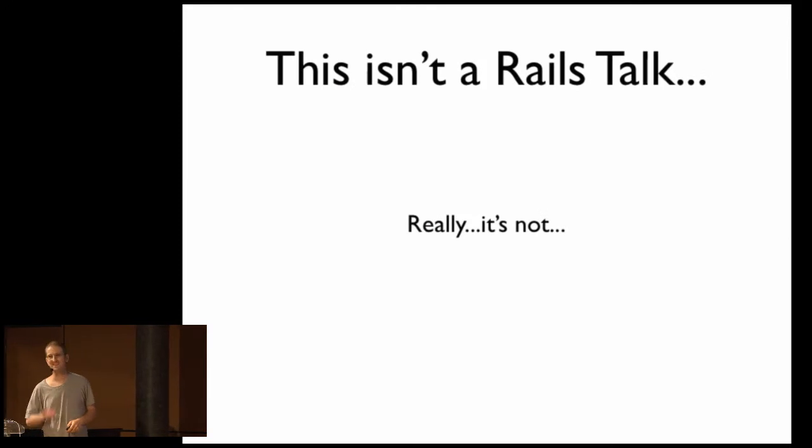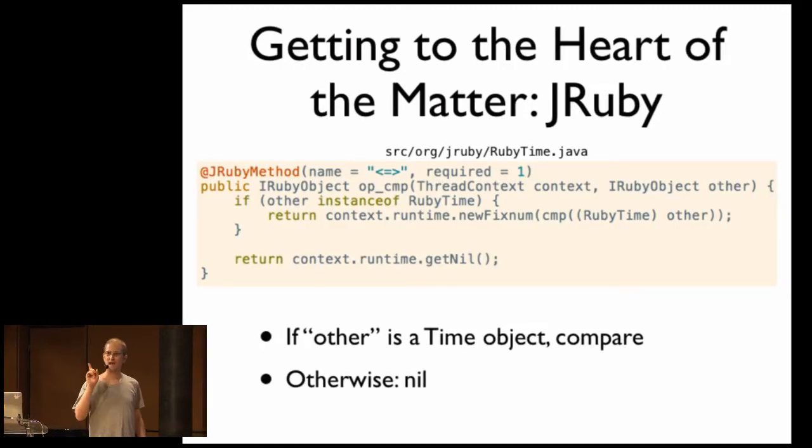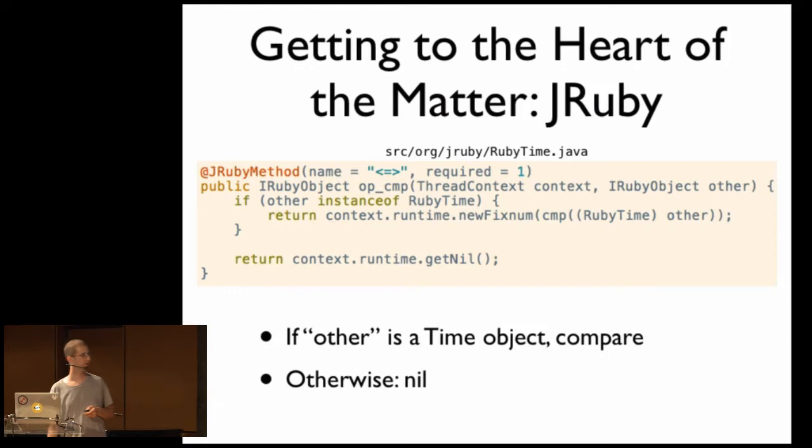The first branch is going to be calling the spaceship operator that's defined on time by the standard library. Okay. This isn't a Rails talk, seriously. Okay. This is just where we had to go to get to the heart of the matter. And that's how JRuby implements the spaceship operator on the time class. Okay. It's Java now. So we're going to jump around a little bit. There's C coming up, just so you're forewarned.